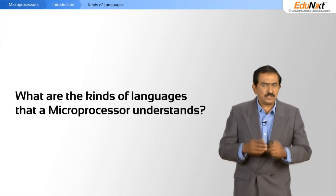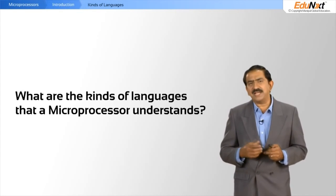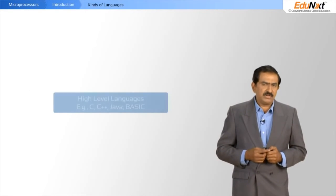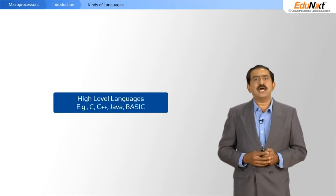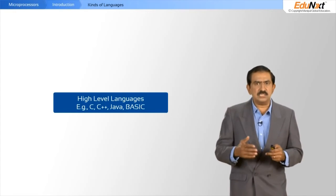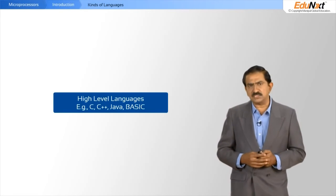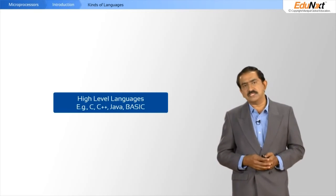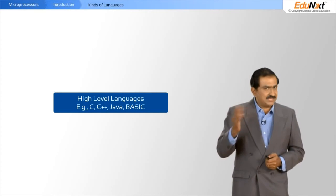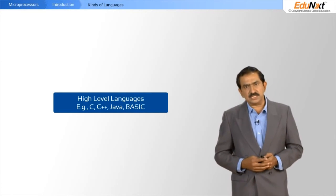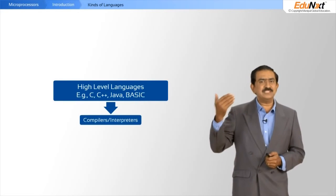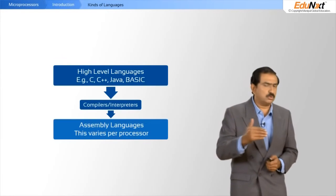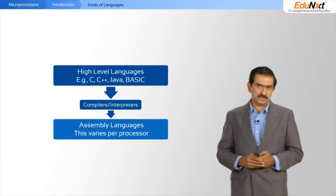The last piece I would like to cover is the kinds of languages that a processor can understand. At the top you have high-level languages — C, C++, Java, and so forth — which many of you would be familiar with. But these are not something the processor can understand. You need to compile or interpret them, which brings you down to assembly level languages.